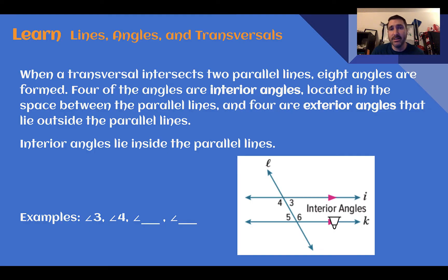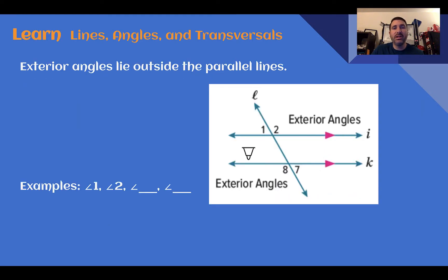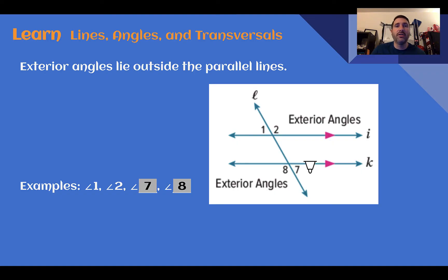When a transversal intersects two parallel lines, eight angles are formed, and these angles have special relationships. Four of the angles are interior angles, meaning they are located between the parallel lines. There are also four exterior angles that are outside the parallel lines. Our interior angles are three, four, five, and six. The exterior angles — outside the parallel lines — are one, two, seven, and eight. Interior means inside or between the parallel lines, exterior means outside, and those words are important because they help determine the location of these types of angles.